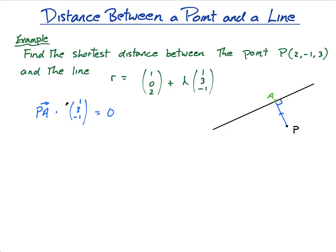But what is PA? PA is A minus P. That's very, very important — if not, go back and revise your vectors. PA is A minus P, where A and P are the position vectors of points A and P respectively. So I have little p: P is the point (2, -1, 3), so its position vector is (2, -1, 3).